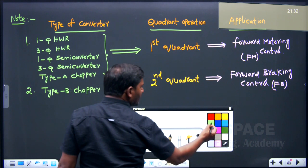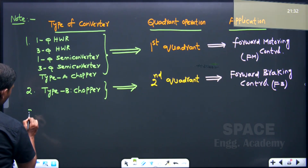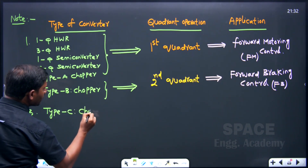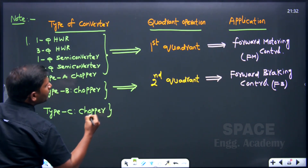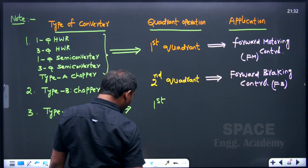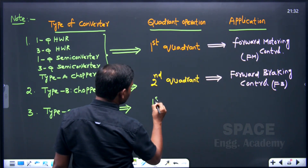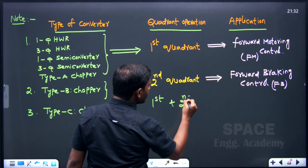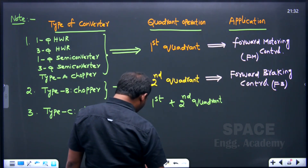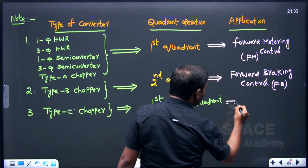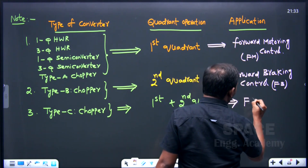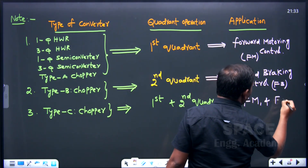The third one is Type C chopper. Type C chopper is operated in the first and second quadrant — that is important. Since it operates in the first and second quadrant, it is used for both forward motoring and forward braking control.